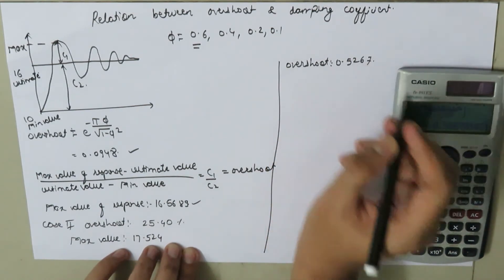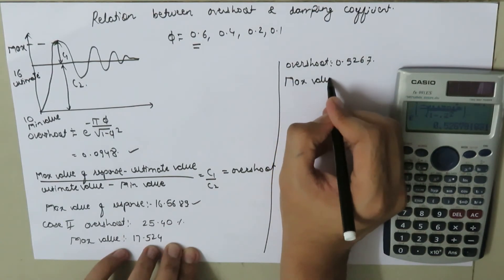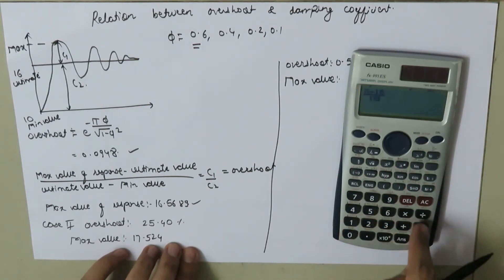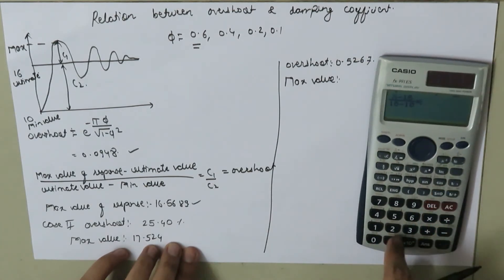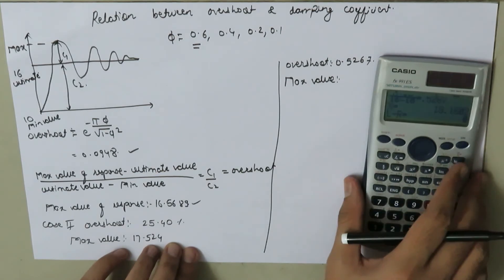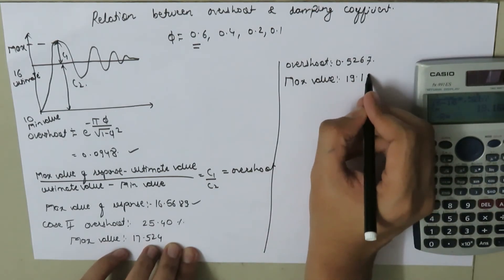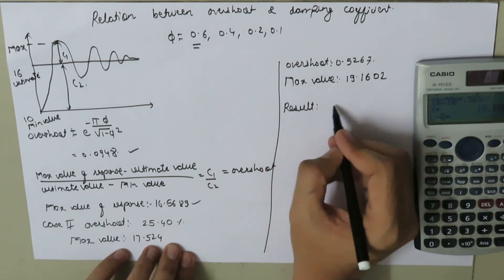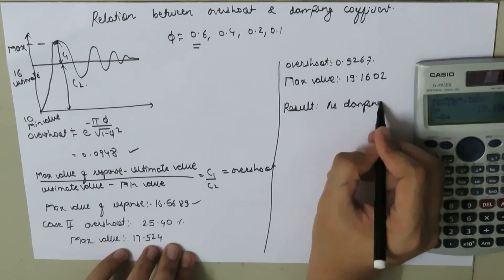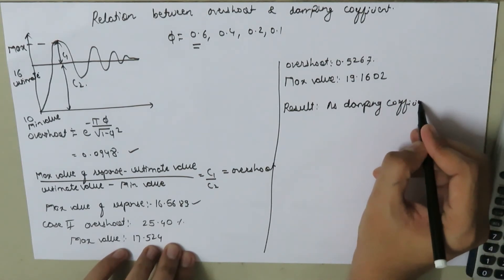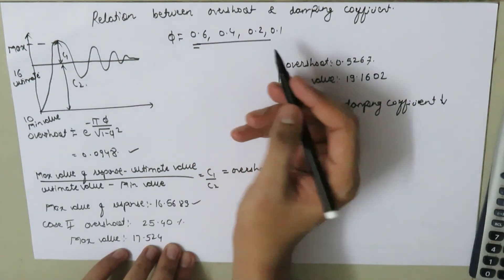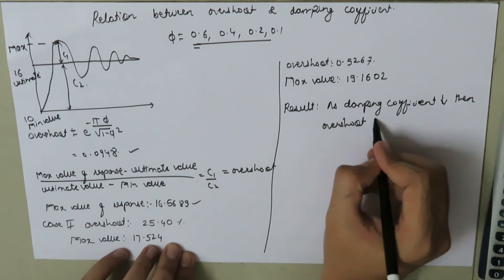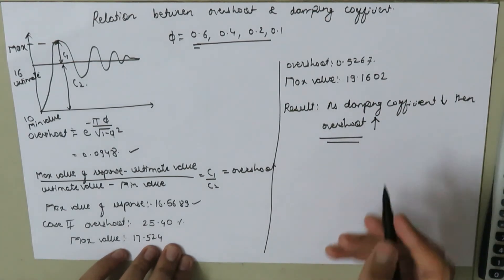For case 3, the overshoot is approximately 0.5267, or about 52.67 percent. From all three cases we conclude that as the damping coefficient decreases, the overshoot increases. Thank you for watching this video.